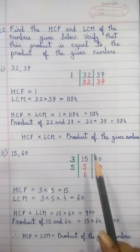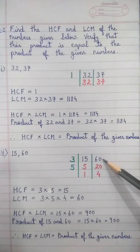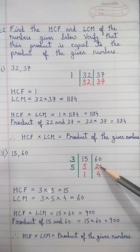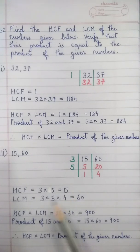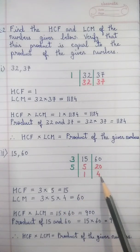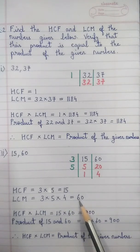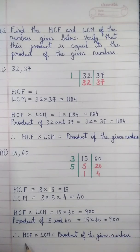Sum 3: 15 and 60. Find prime factors: 3 fives are 15, 3 twenties are 60. Then divisible by 5: 5 ones are 5, 5 fours are 20. HCF = 3 into 5 = 15. LCM = common factors into bottom row = 15 into 4 = 60. HCF into LCM = 15 into 60 = 900, and product of 15 and 60 is also 900. This again proves HCF × LCM = product of the given numbers.